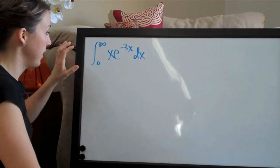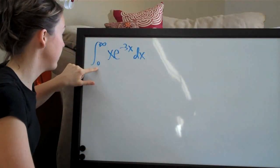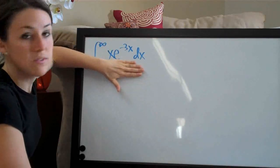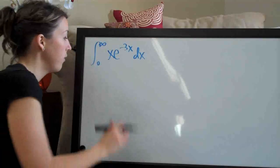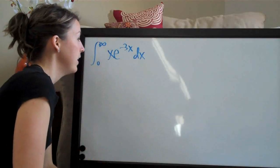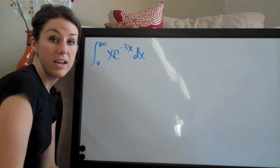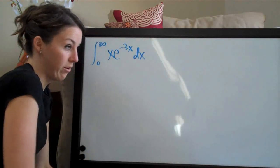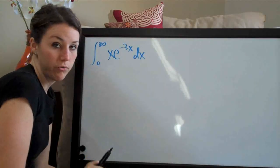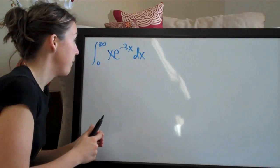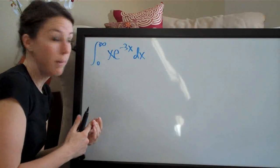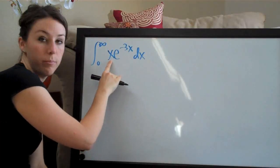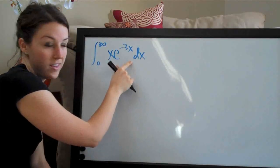Whenever you see an integral problem with a range like this — 0 to infinity — just ignore that for now. Pretend it's not there. The first thing we want to do is deal with the integral. xe to the negative 3x is not simple enough to integrate immediately, so we need to decide whether to use u-substitution, partial fractions, or integration by parts. In this case, we're going to use integration by parts, because we have x as one term and e to the negative 3x as a separate term.